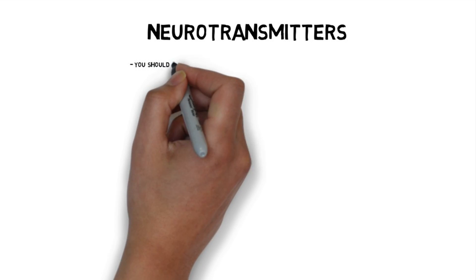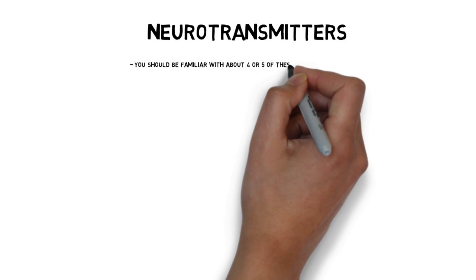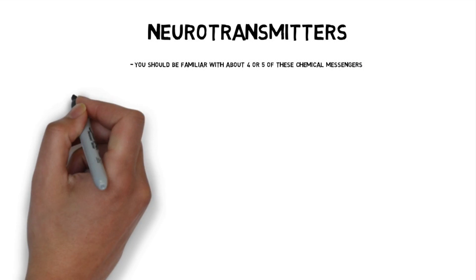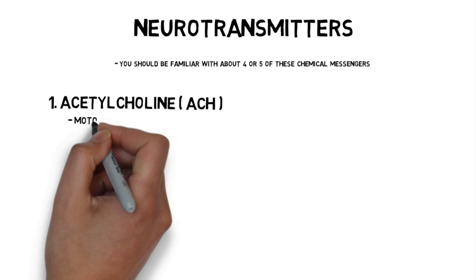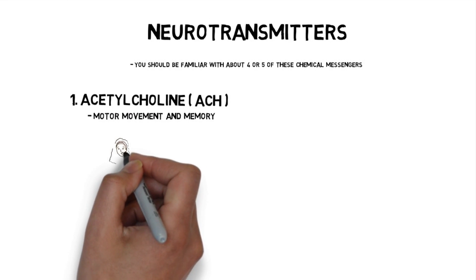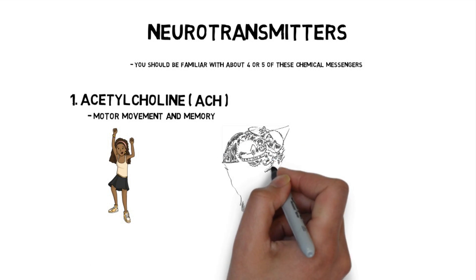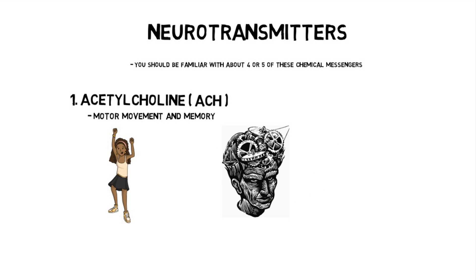But for the purposes of an intro psych class or AP class or an IB class, you really only have to know about four or five. So let's go through them quick. One important neurotransmitter is called acetylcholine. Good luck trying to spell that. So scientists just call it ACH for short.